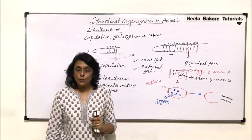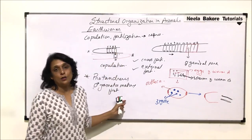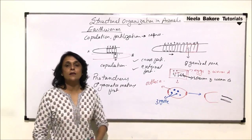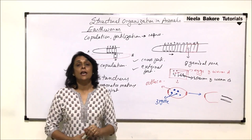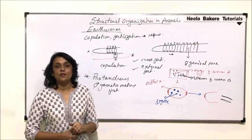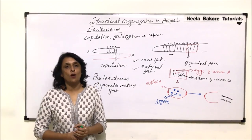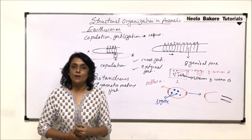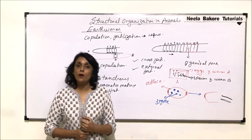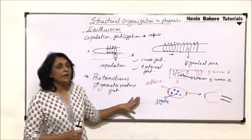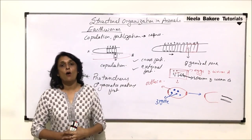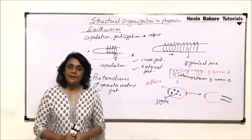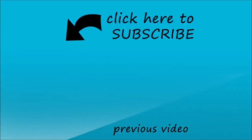When we talk about earthworm reproduction, the reproductive system is very well developed. Though the organism is hermaphrodite, it still shows cross fertilization. Cross fertilization is always better because there is recombination of genetic material, which is beneficial for evolution. With this we are done with all the systems of earthworm, and in the next part we'll start with another animal.